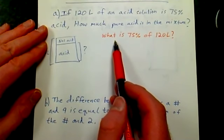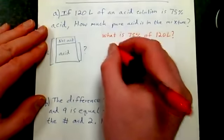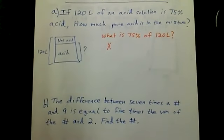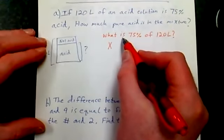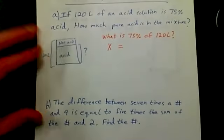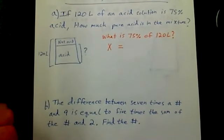"What" is the thing we want to know, how much pure acid there is. Usually we call that the variable or X. "Is" makes you think of an equal sign. X is equal to 75%. If you've ever worked with percentages in math, you know that when you have a percentage you have to convert it to a decimal.